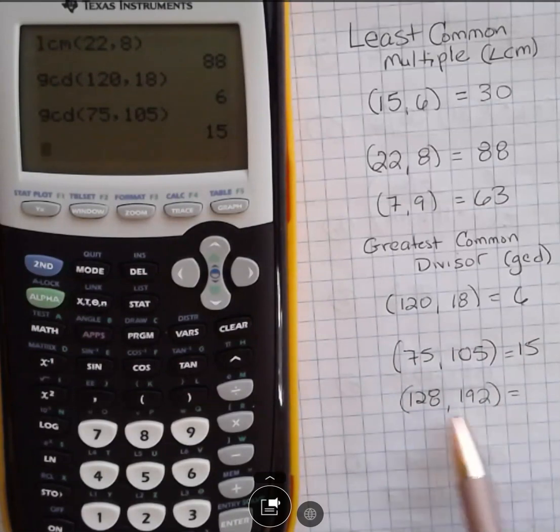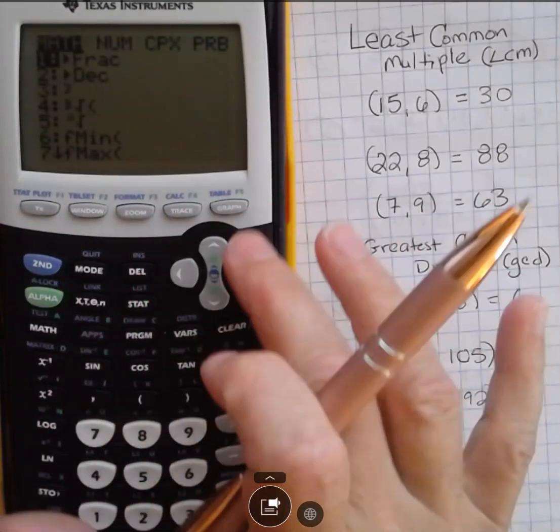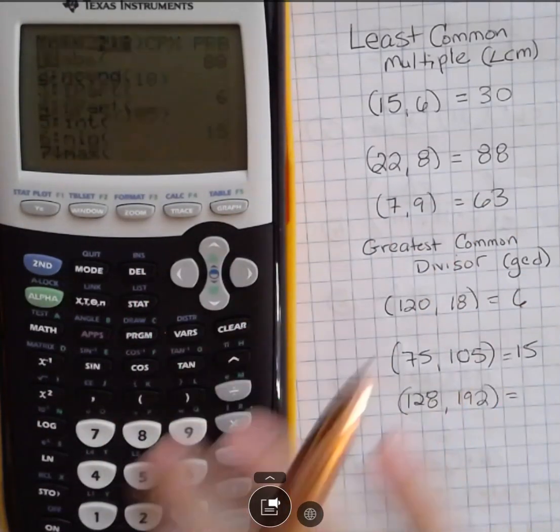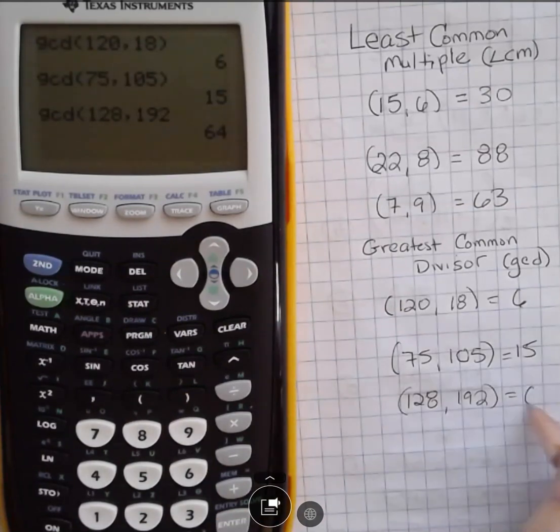Those might be easier to find. When the numbers get bigger, it might be a little bit harder. So I think it's nice to know how to do this. Math over 1. I'm going to hit 9 for GCD, and I'm going to enter the 128 and the 192. I don't need to finish that off. It's going to tell me that the greatest common factor is 64.